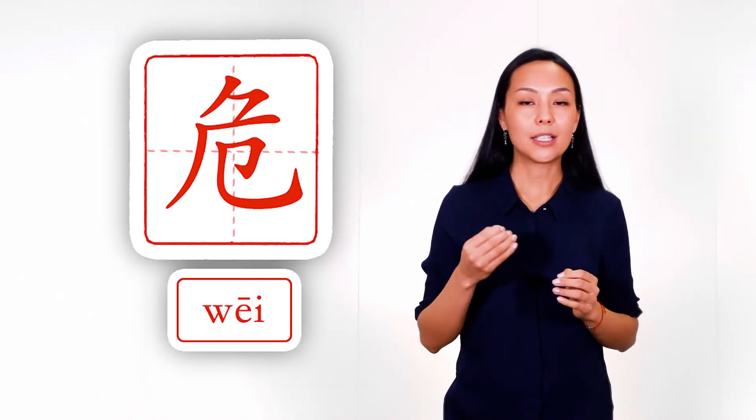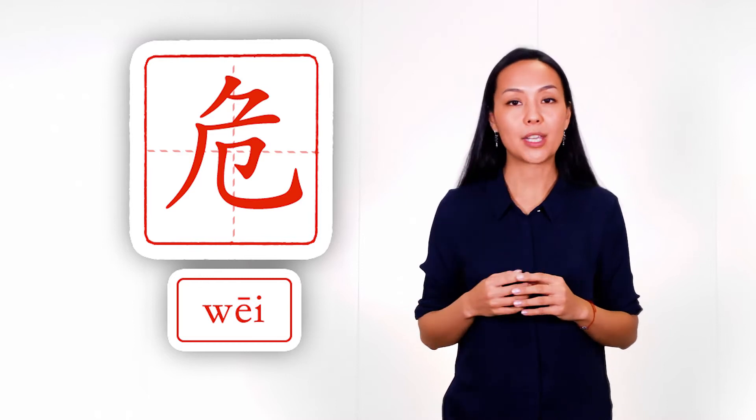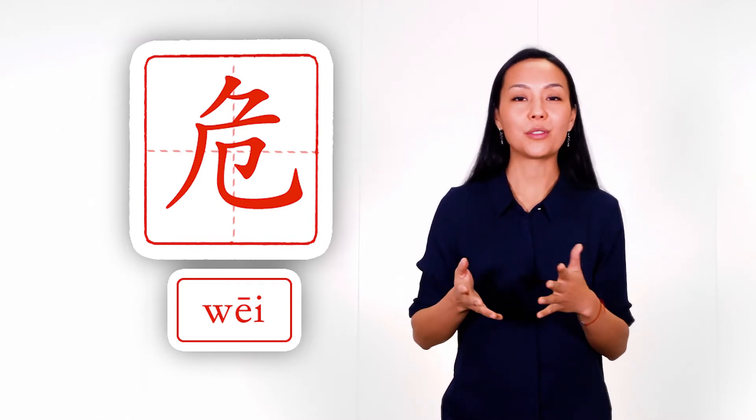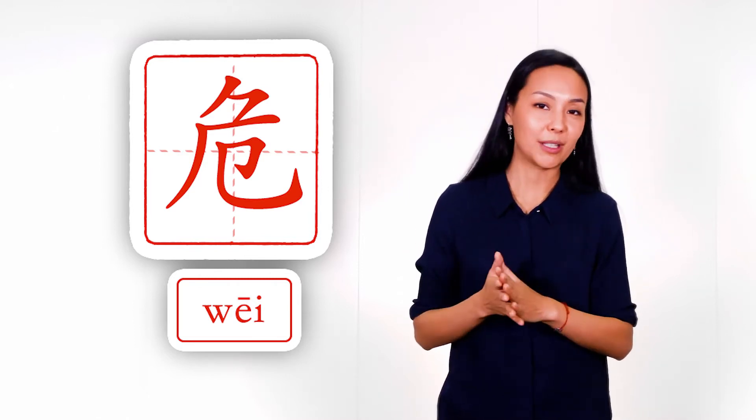Let's study characters with this radical. The first example is the word dangerous, and we see knife on top here, so usually people with knives, they can be dangerous.